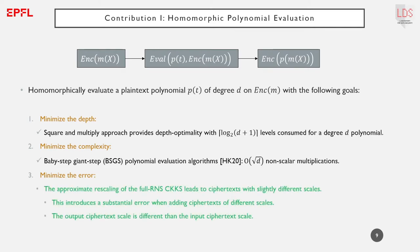The approximate scaling of the full RNS CKKS slightly modifies the ciphertext scale, implying that ciphertext additions will result in additional unwanted error when their scales are not identical. Moreover, the final ciphertext scale after polynomial evaluation will not be the same as the input one. Managing the scale in deep circuits is a difficult task and often requires consuming an extra level to reset the ciphertext scale to the original one.